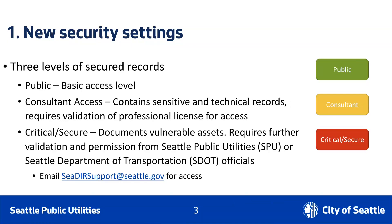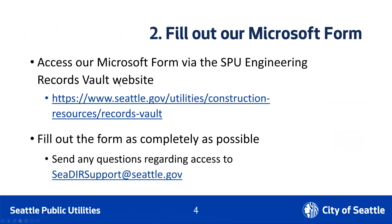If you feel that you need access to a record that documents critical infrastructure, please email cedarsupport at seattle.gov — that's s-e-a-d-i-r-s-u-p-p-o-r-t at seattle.gov — for access to these records. We'll need to verify some more information and get the permission of officials from Seattle Public Utilities or Seattle Department of Transportation before granting limited access to these items.